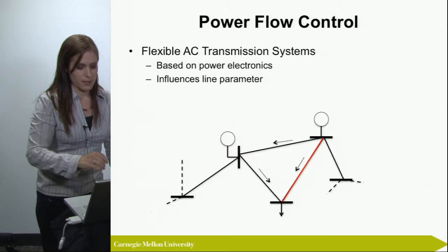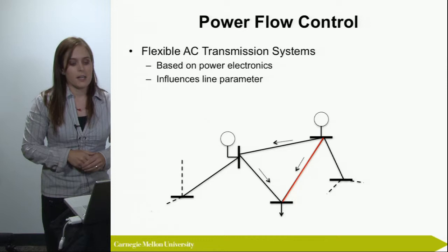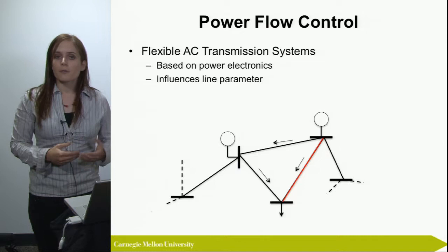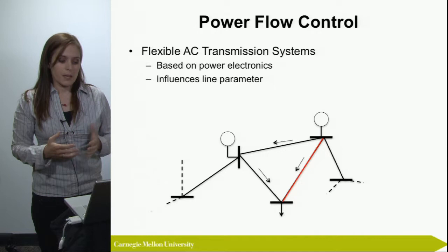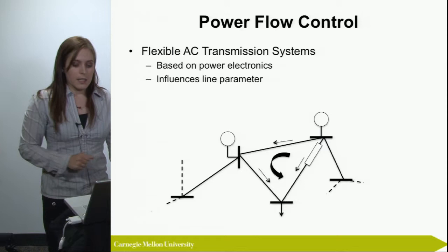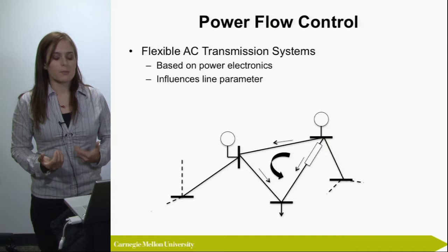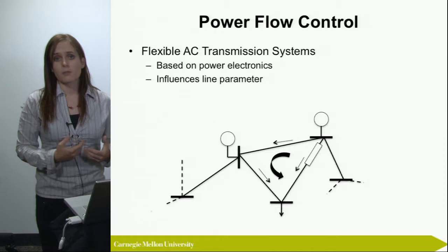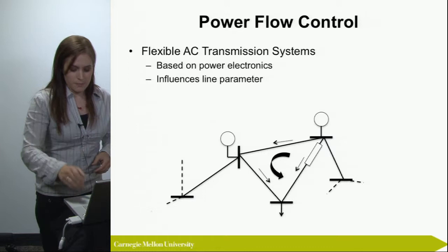Let's first talk about flexible AC transmission systems, or FACTS devices. These devices are based on power electronics and work by influencing the line parameters — specifically the reactance of a line — which determines how much power flows over it. If we place such a device in a congested line, it allows us to push some power over the parallel system. That means we can still use our cheap generator or increased wind generation at that location to supply the load.